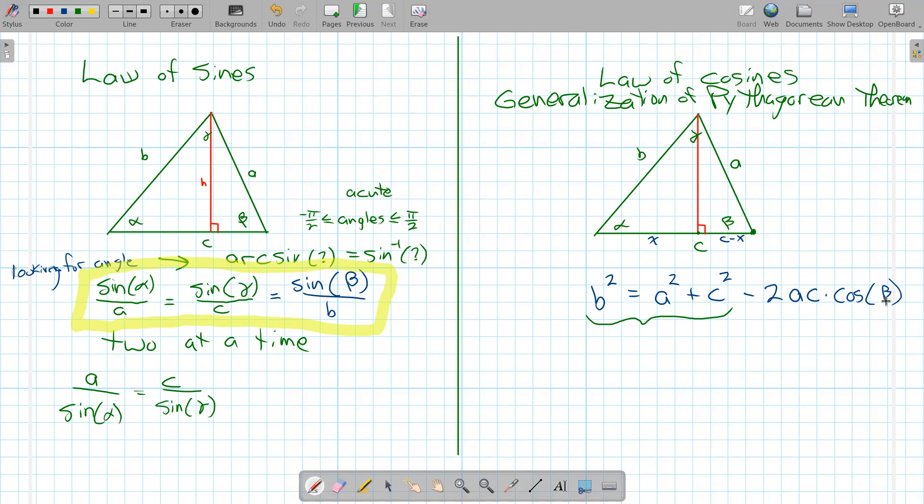And recall, the cosine of pi over 2 is 0, and that means this part would disappear, so this part right here would become 0 if beta is pi over 2, or 90 degrees. So that's why it's a generalization of the Pythagorean theorem.